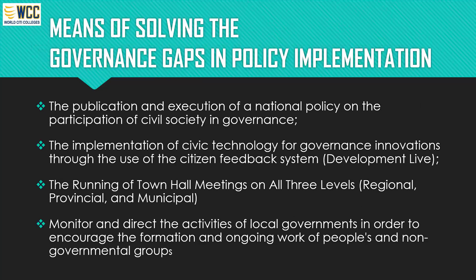There are means of solving the governance gaps in policy implementation based on studies. First is the publication and execution of a national policy on the participation of civil society and governance. Second is the implementation of civic technology for governance innovations through the use of citizen feedback systems — a recognized global governance tool where citizens can raise concerns about corruption, promoting participatory governance and potentially reducing corruption. Third is the running of town hall meetings at all levels — regional, provincial, and municipal.